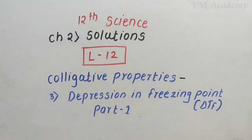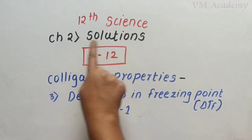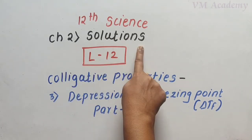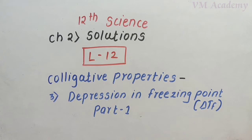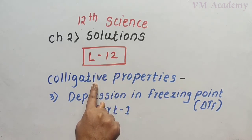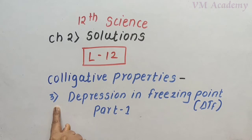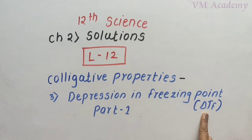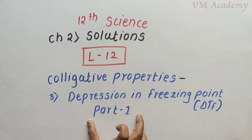Hello and welcome, dear students. I am Roshali Ma'am from VM Academy Classes, Nasik. We are covering the Maharashtra State Board syllabus for 12th Science. We are looking at Chapter Number 2, Solutions. Today is Lecture Number 12. We are discussing colligative properties, and today we need to discuss the third colligative property: depression in freezing point, denoted by delta TF.